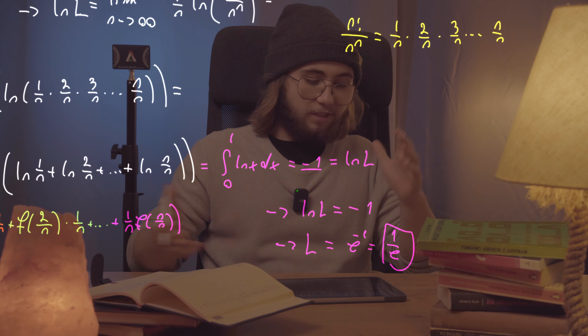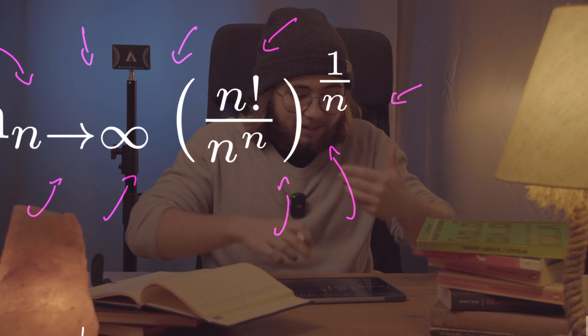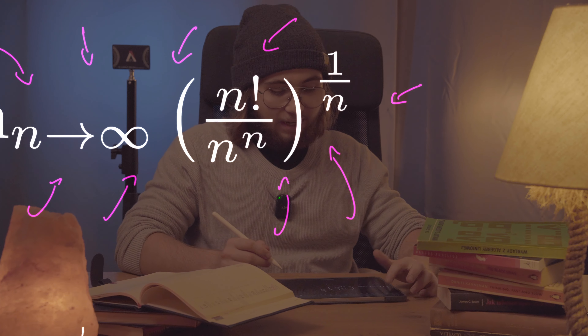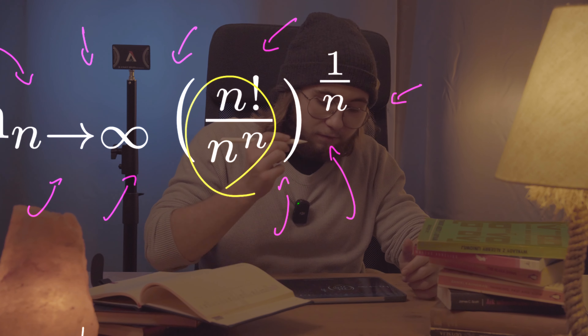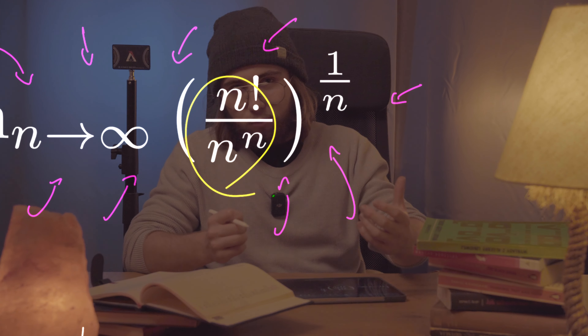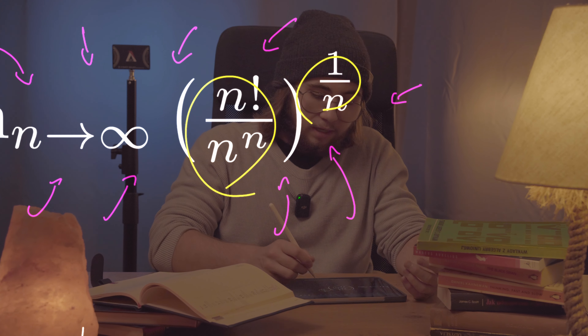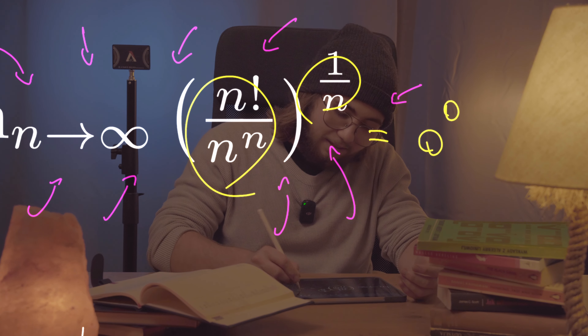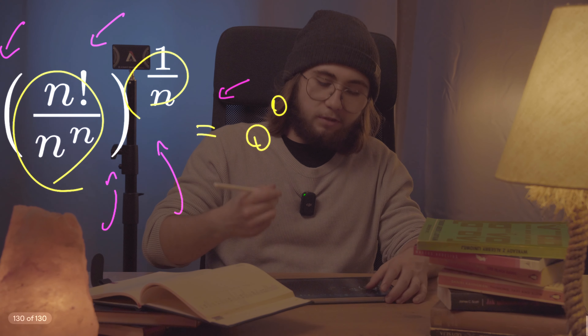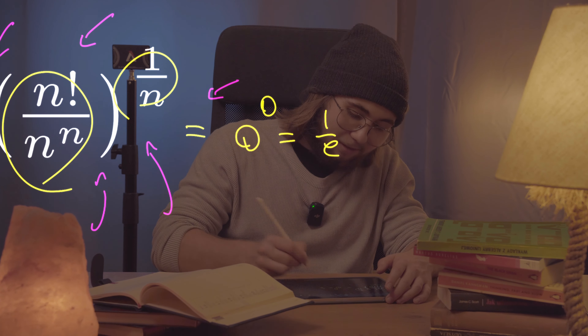So if ln(L) = -1, then L = e^(-1) = 1/e. This is a beautiful result — not only because we used a Riemann sum integral to evaluate a limit, but because what looked like a 0^0 indeterminate form actually turned out to equal 1/e.